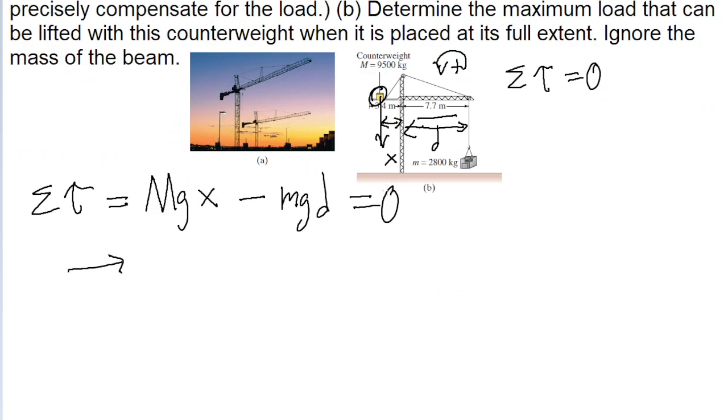You can do that pretty simply. Since it's equal to zero, we can get rid of this negative sign by adding m, g, d to both sides of the equation. So we have big M, g, x equals small m, g, d. These g's cancel out because it's on both sides of the equation. And then we can solve for x by dividing both sides of the equation by big M. So we find that x, the distance we want, is equal to m, d divided by big M. So now all that's left is to plug our values into the equation.